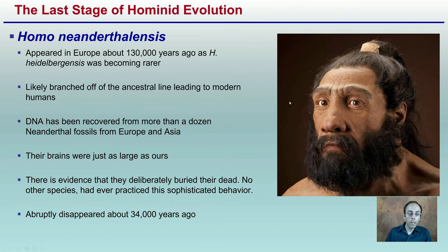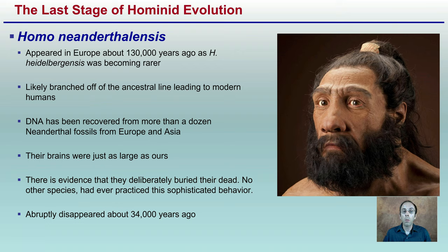Homo neanderthalensis appeared in Europe about 130,000 years ago, just as Homo heidelbergensis was becoming rarer. They likely branched off the ancestral line leading to modern humans. DNA has been recovered from more than a dozen Neanderthal fossils from Europe and Asia. Their brains are just as large as ours, and there is evidence that they deliberately buried their dead — a sophisticated behavior no other species had ever practiced before. They abruptly disappeared about 34,000 years ago.